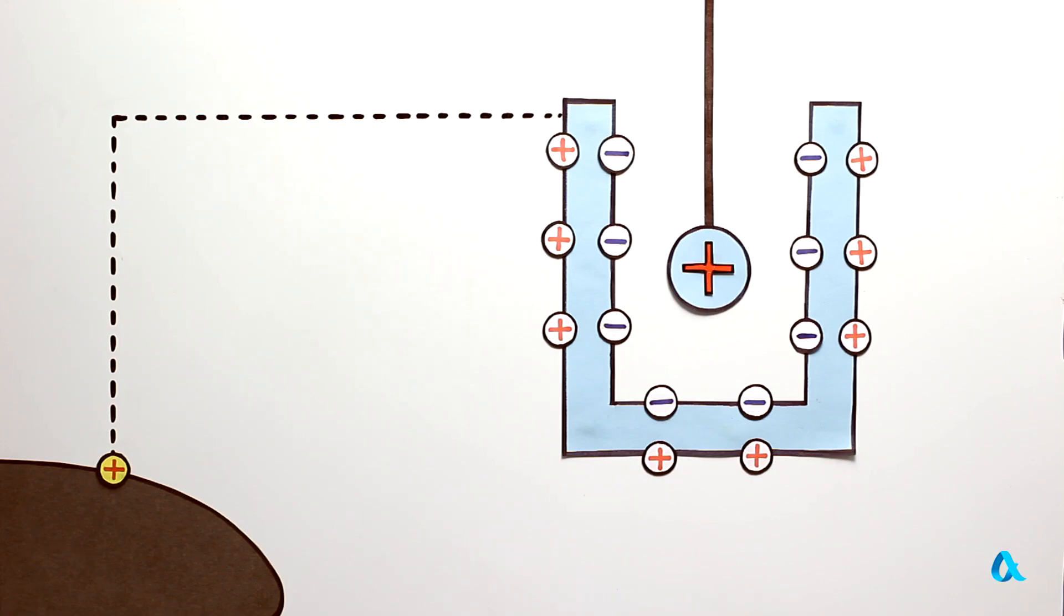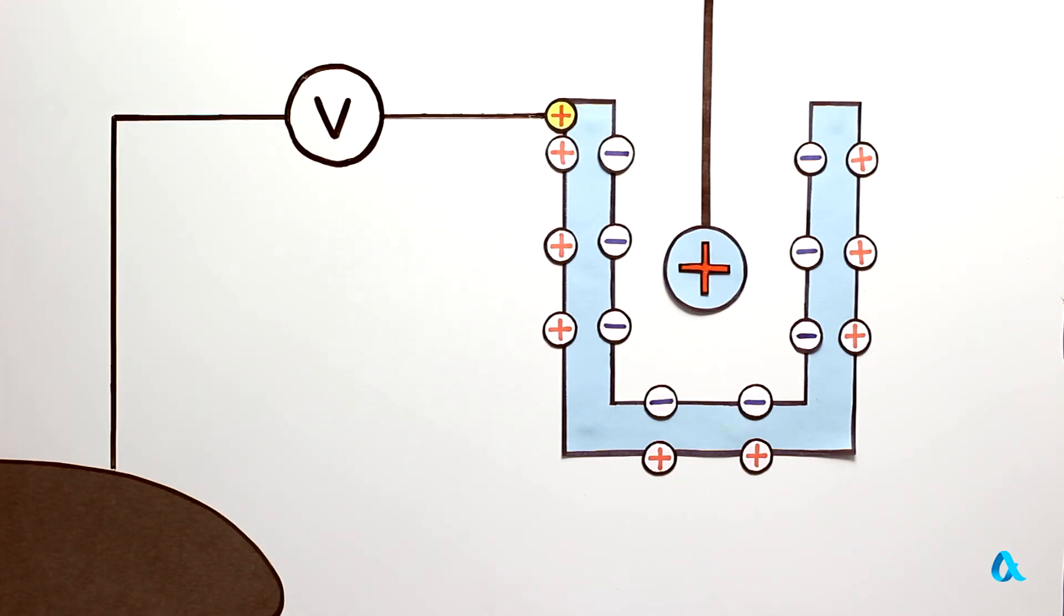Now to move a unit positive test charge from ground to the mesh we'll have to do some work. This work is proportional to the value of the charge put in the cage. It is this work that is measured by the electrometer.